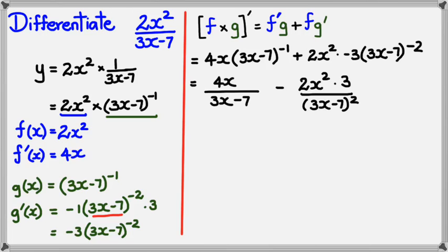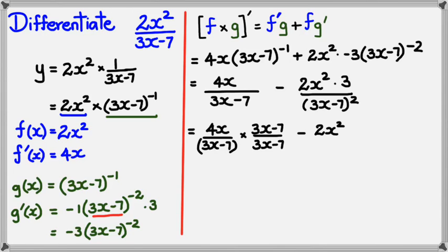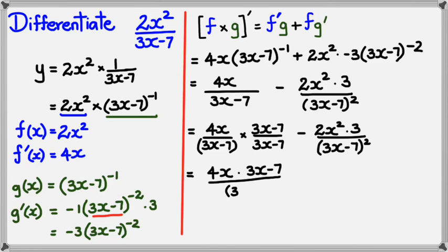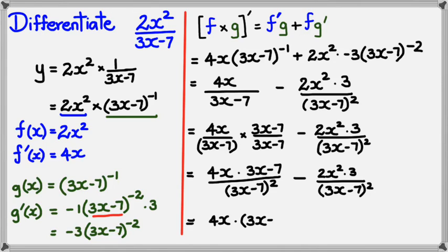I'm going to make the denominators the same. I'll multiply the left-hand term by 3x minus 7 over 3x minus 7. That gives me 4x times 3x minus 7 divided by 3x minus 7 squared, minus 2x squared times 3 divided by 3x minus 7 squared. Since they have a common denominator, I can combine them: 4x times 3x minus 7 minus 2x squared times 3, all divided by 3x minus 7 squared.